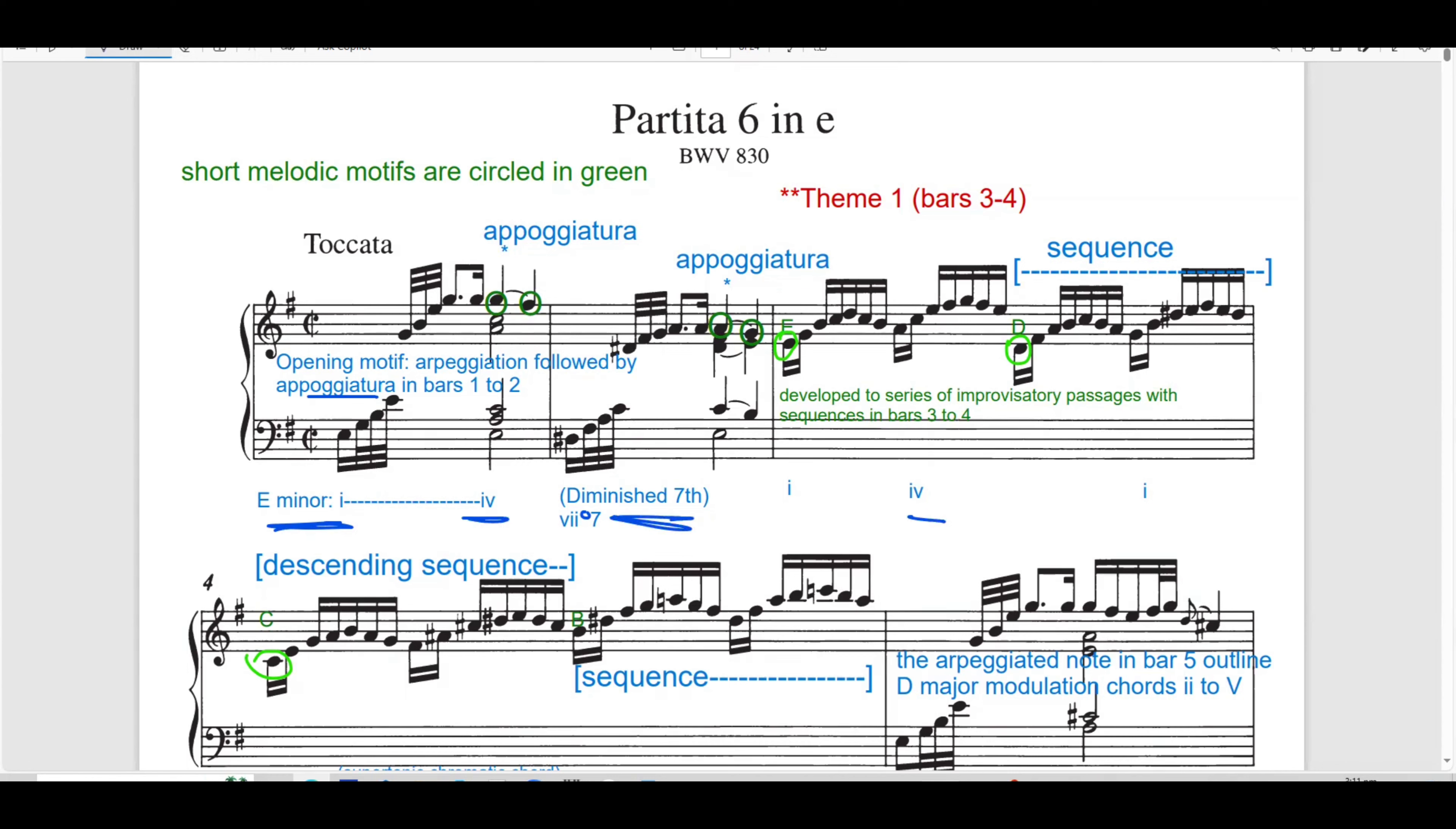Harmonically, the progression is set in E minor, the tonic key. The harmonic structure of bar 1 from the tonic to the subdominant in bar 2, leading to the diminished 7 chord.